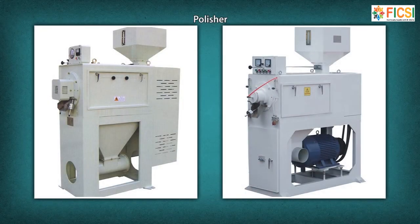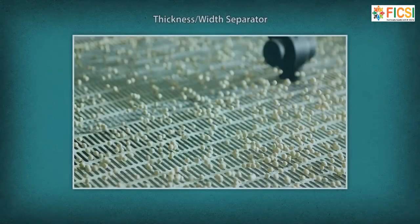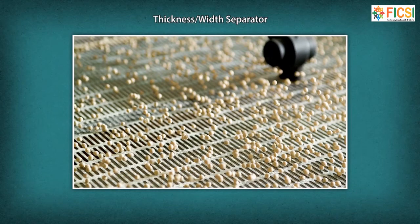Polisher: It gives a translucent appearance to the rice with the application of fine water mist prior to polishing. Rotary Sifter: This machine can sift milled rice efficiently in many grades. Thickness or Width Separator: This machine is widely used at large scale rice mills, seed processing plants and grain or bean processing plants to separate broken grains and immature grain.